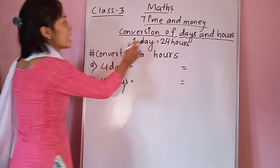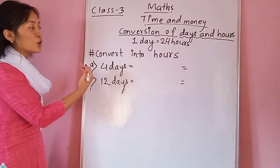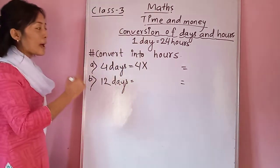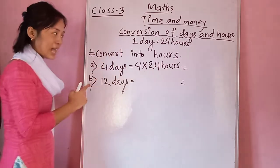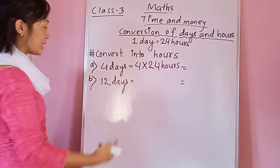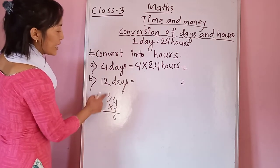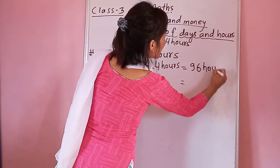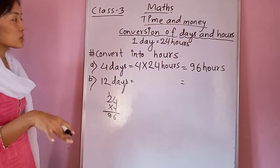So let's do it. Here it is written four days. One day equals 24 hours, so how many hours will be in four days? You write four as it is, multiply by 24, and don't forget to write 'hours' at the end. Now do the multiplication: 24 into 4 — four fours are 16, four twos are 8, so you get 96. In four days there are 96 hours.